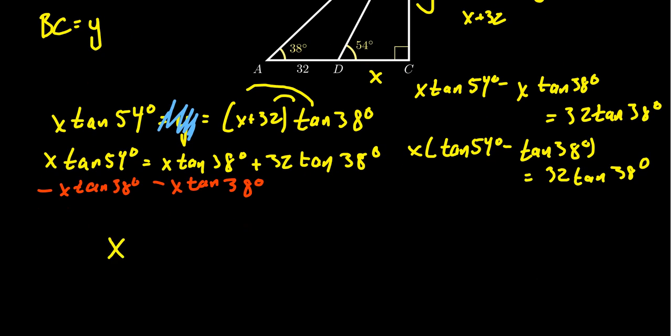we get the exact answer for X. We get that X is going to equal 32 times tangent of 38 degrees over tangent of 54 degrees minus tangent of 38 degrees.